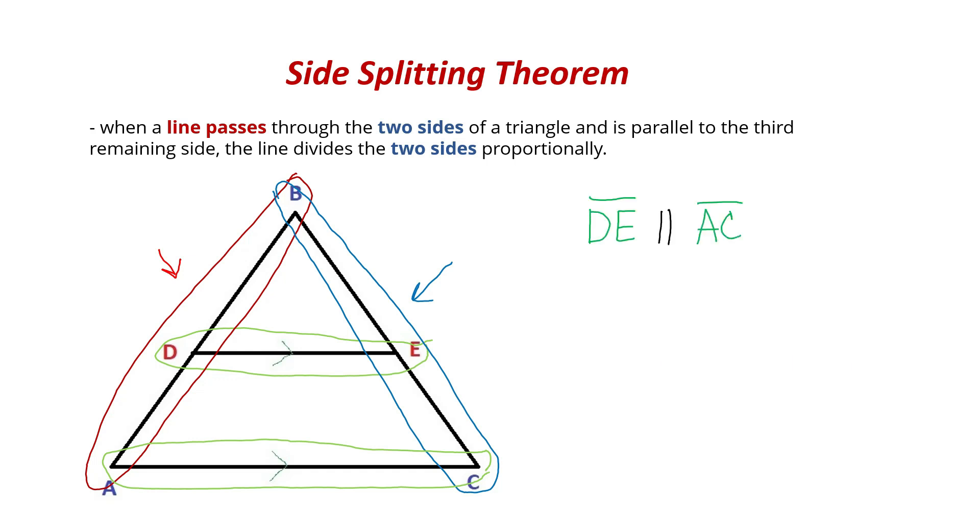So if we were to write that out to indicate that DE, the line segment DE, is parallel to AC, then that means if we were to write the red side out here, AD, which is the bottom part of the line segment, and DB, which is the top part of the line segment, is equal to, on the blue side, CE over EB.